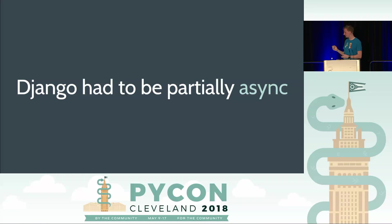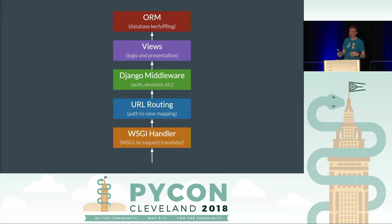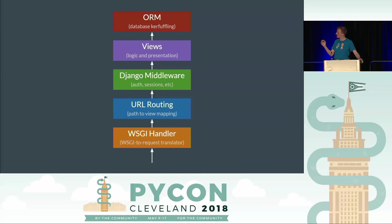So let's talk about how Django is structured. Django is a basic layer model. At the very bottom you have a WSGI handler that takes your incoming raw WSGI request and turns it into a Django request object. Above that, you have URL routing that reads the request object, finds a view, and gives it to the view. Above that, you have middleware — before you get to a view you run through middleware which adds things like authentication and sessions. Then you come to a view which does business logic and presentation, and finally from a view you're usually talking to the ORM.